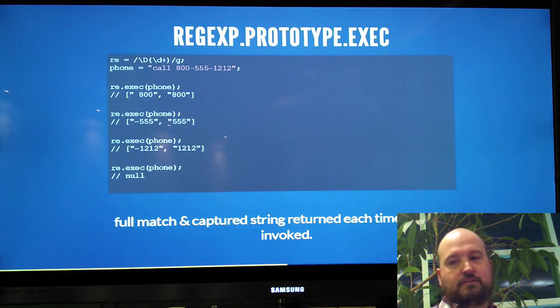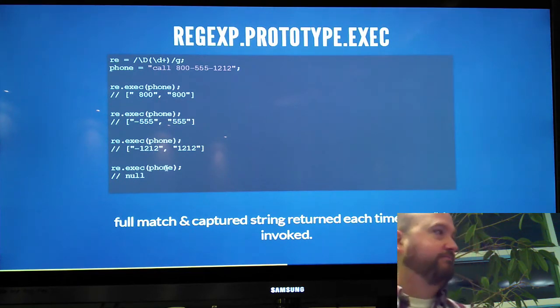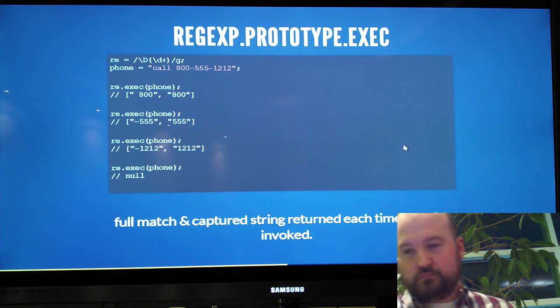Exec is part of the regular expression object. If you create your regular expression, invoke it on the string, each time you call that regular expression with exec, it's going to remember where it was in the string. It's going to show you the entire thing that I matched. Invoke it again. I'm going to get the next group. The entire thing and then the part that was captured. And then one more time. And sometimes it may be important to have both pieces. Final time you call it, we've run down the end of the string. You're going to get null. Now if I do this all over again, we're going to go right back to getting 800. It's going to start over again.